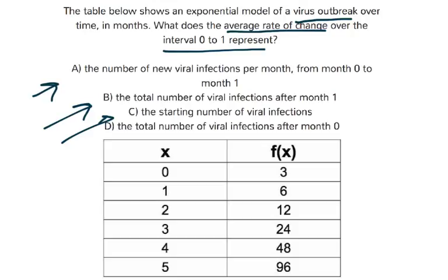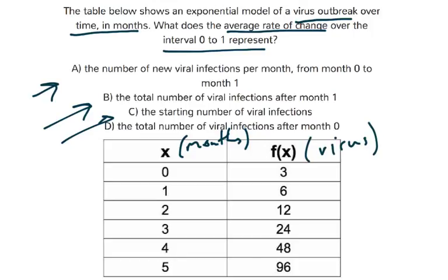The virus outbreak is modeled in time, specifically in months. So x, which is the input, is months, and f(x), the function, is telling us how much the virus is spreading. Let's go ahead and read through the answers and see which one might make the most sense. Remember, the interval here is 0 to 1 — that's really important to keep in mind.